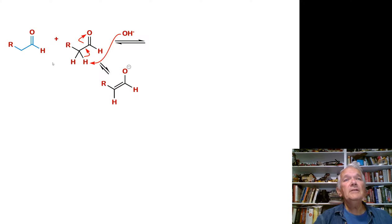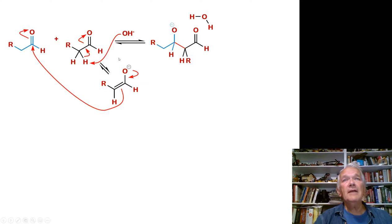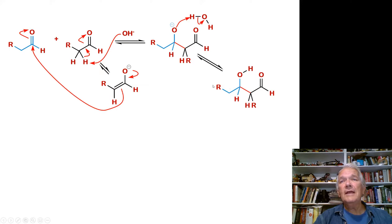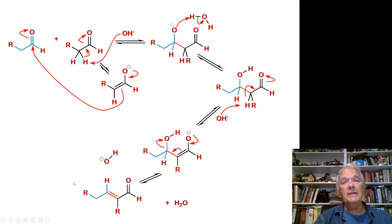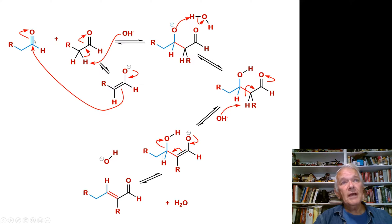We form the first enolate, which reacts with the second aldehyde to give our addition product. We grab the proton to go to the aldol, then add another hydroxide to do the elimination, giving us our enal. From the color coding, the first (black) aldehyde is the piece on the right and the second (blue) aldehyde is the piece on the left. The double bond is there because the oxygen of the second aldehyde and two hydrogens of the first aldehyde are missing — we've pulled out a molecule of water.